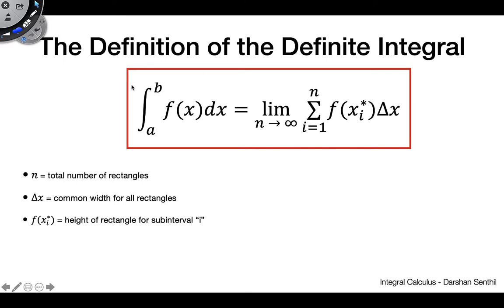And this is what it is. So the definite integral from a to b of f(x)dx is just going to be the limit as n goes to infinity of the sum from i equals one to n of f(x_i)*Δx. It's still the Riemann sum formula, except we have that limit now as n goes to infinity.